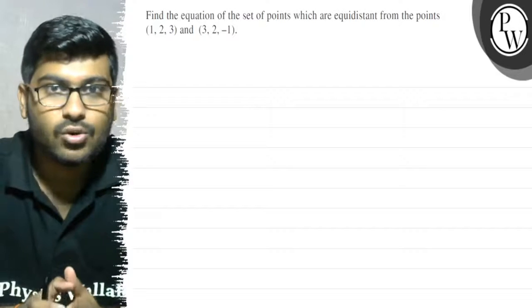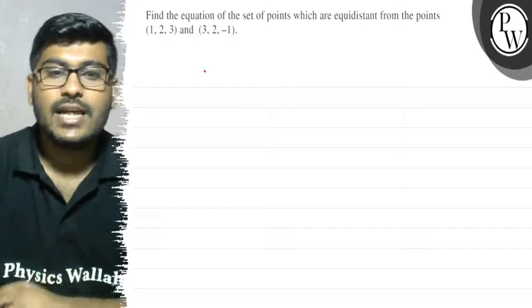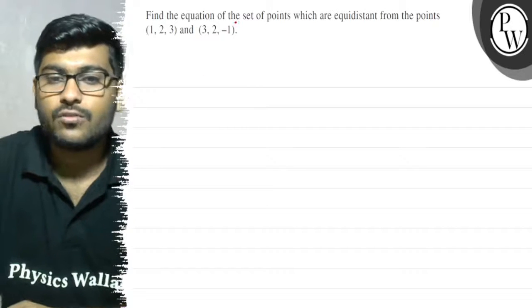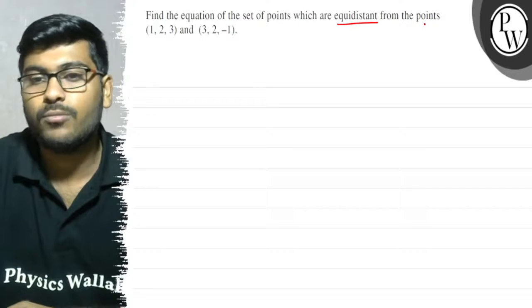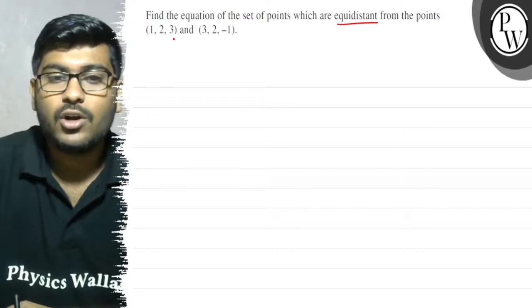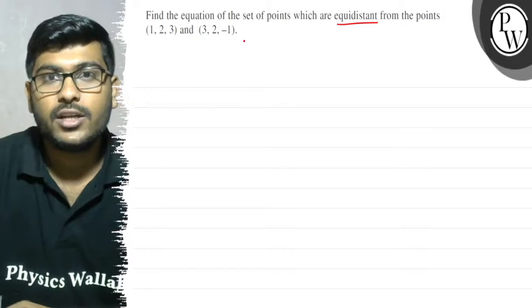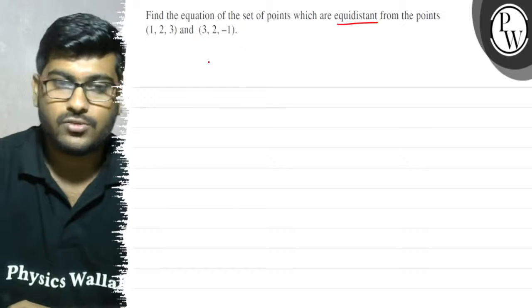Hello, let's see this question. The question says: find the equation of the set of points which are equidistant from the points (1, 2, 3) and (3, 2, -1).